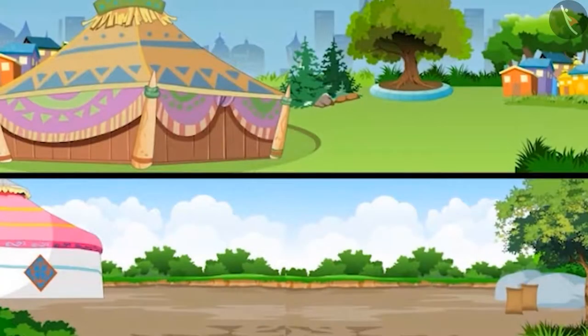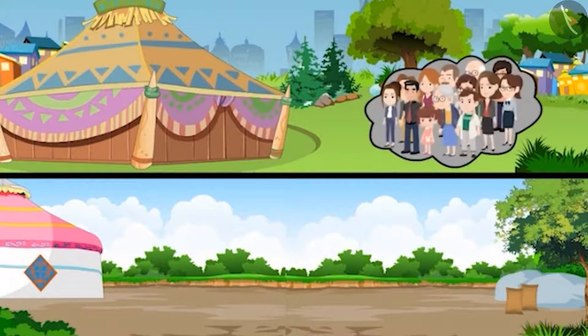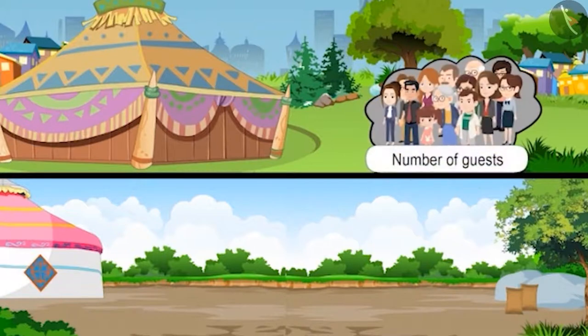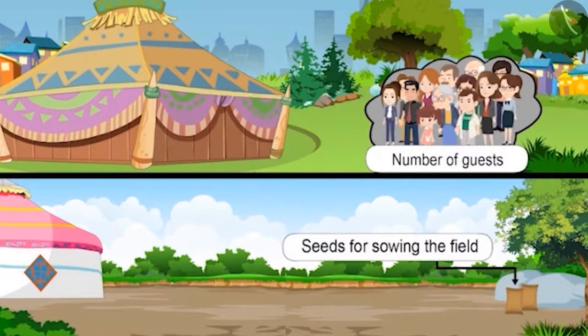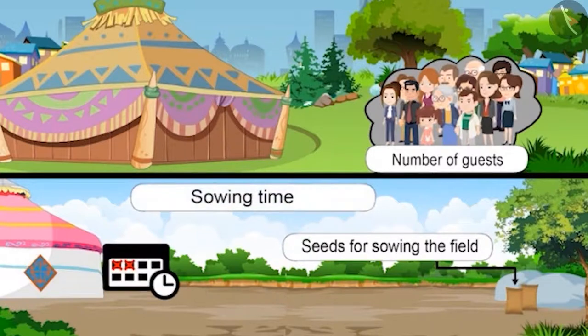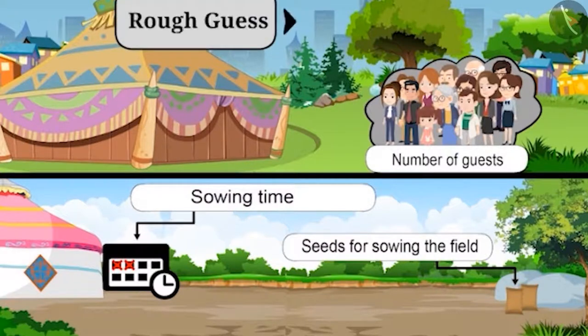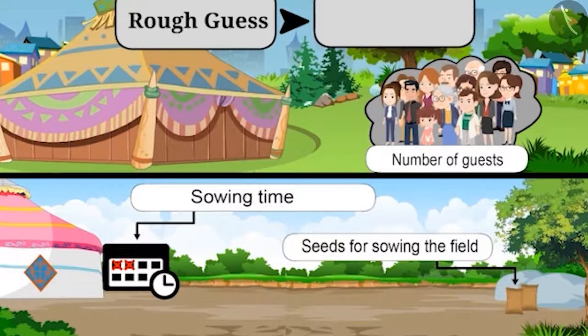In certain cases, we can't find the exact number. In such cases, we simply do the rough estimation to find the number. For example, number of visiting guests, essential seeds for sowing the field and sowing time, etc. The rough guess of any number is called estimation.